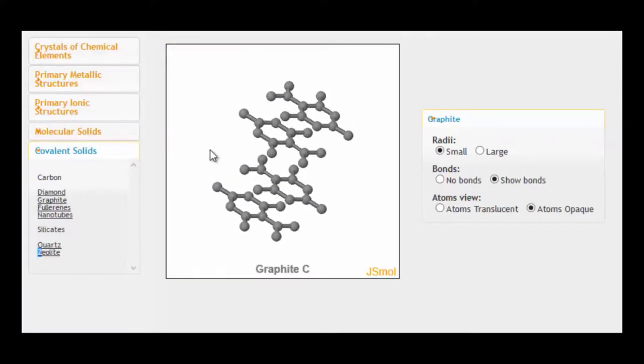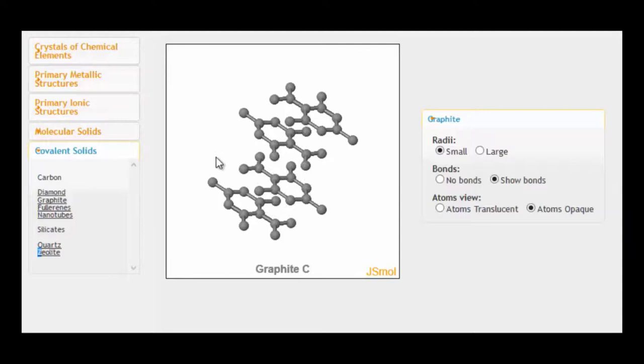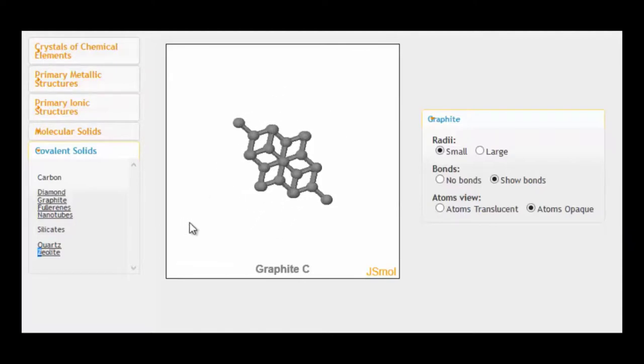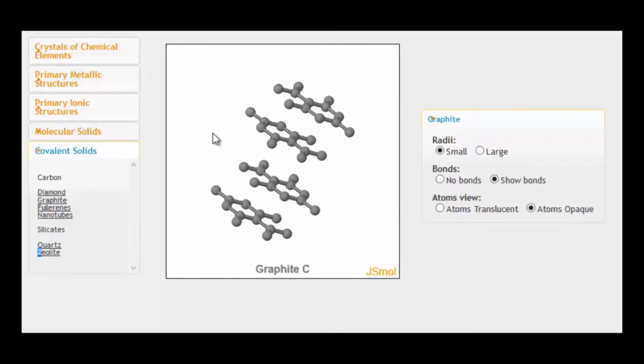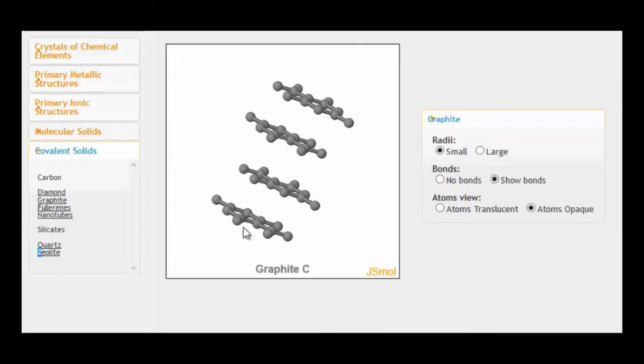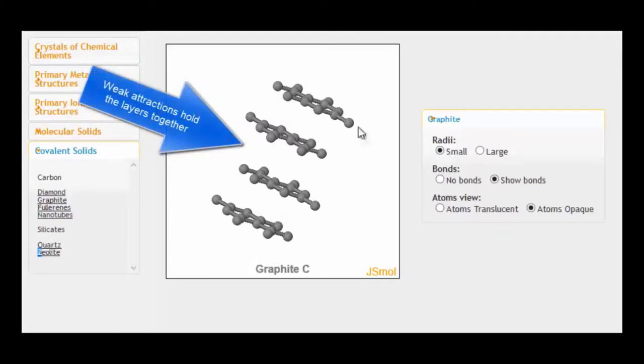So this shows four layers. Each layer, unfortunately, in this particular representation is only very small. It's not showing you very much of the layer. But you can see how they're effectively separate, the layers. The only thing that holds them together are those weak van der Waals forces.